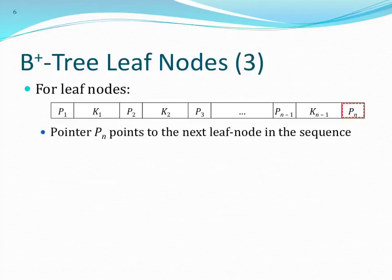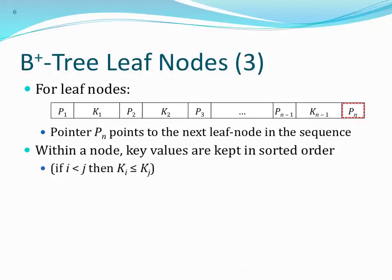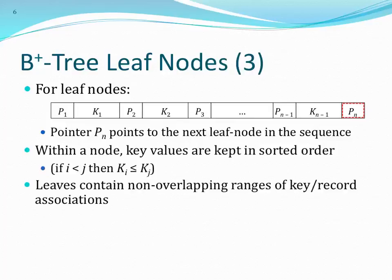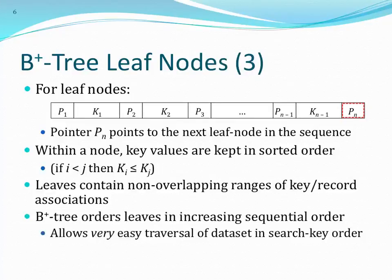Leaf nodes have a wonderful property: the last pointer in each node is a pointer to the next leaf node, and they are ordered in sequence. This allows us to do range queries or anything where we need to traverse data in sequence based on the search key. Within nodes, key values are kept in sorted order, and leaves contain non-overlapping regions of key-record associations, allowing us to traverse records in sequential order just by running through the leaf nodes.